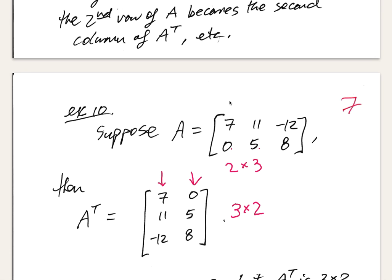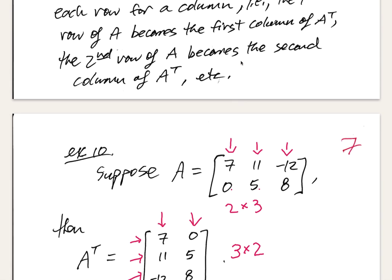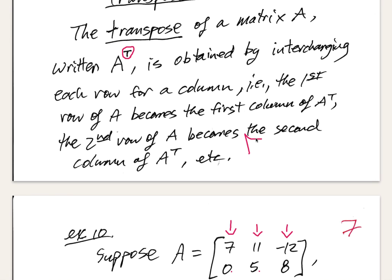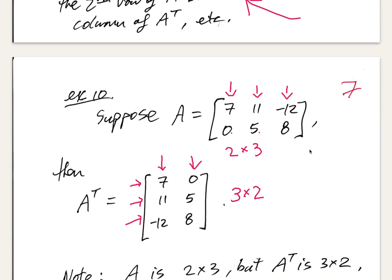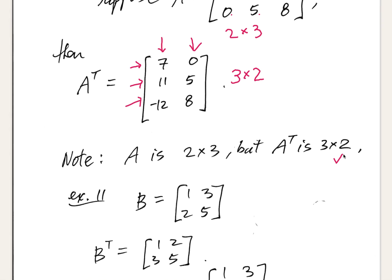Another way of interpreting the transpose: I took the first column of A and turned it into the first row of A transpose, the second column of A into the second row of A transpose, and so forth. Either way, it's a pretty easy operation.